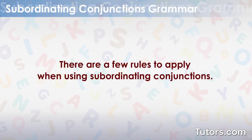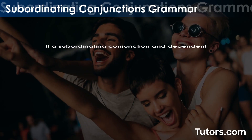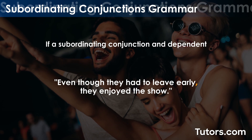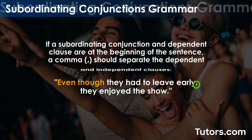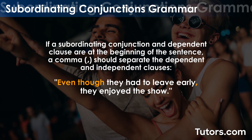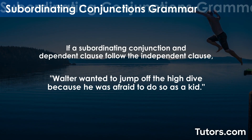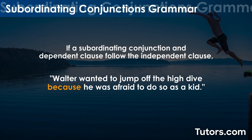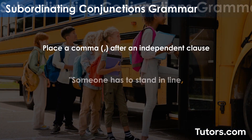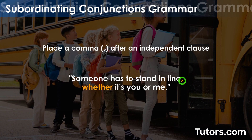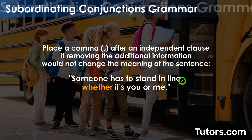There are a few rules to apply when using subordinating conjunctions. If a subordinating conjunction and dependent clause are at the beginning of the sentence, a comma should separate the dependent and independent clauses. If a subordinating conjunction and dependent clause follow the independent clause, a comma is typically not necessary. Place a comma after an independent clause if removing the additional information would not change the meaning of the sentence.